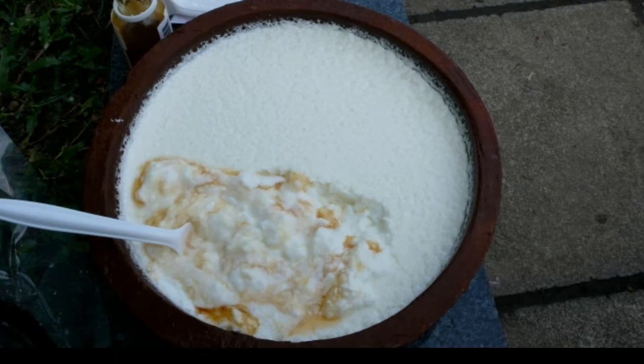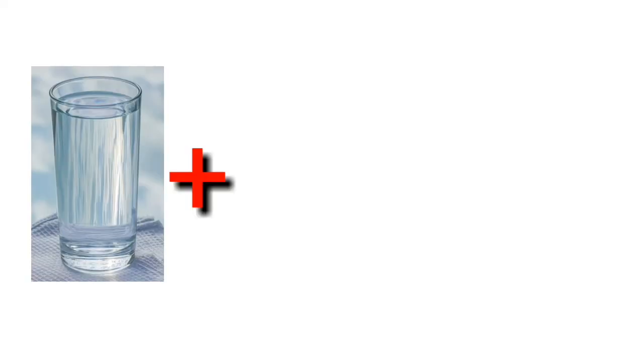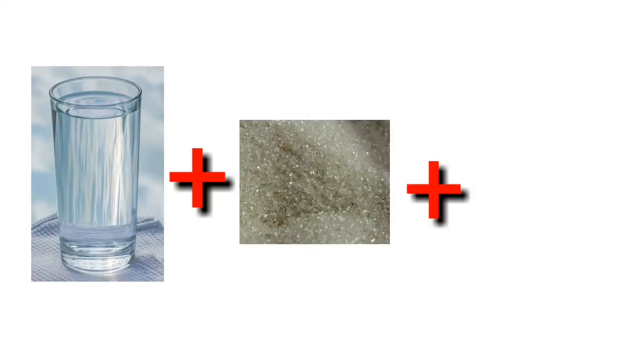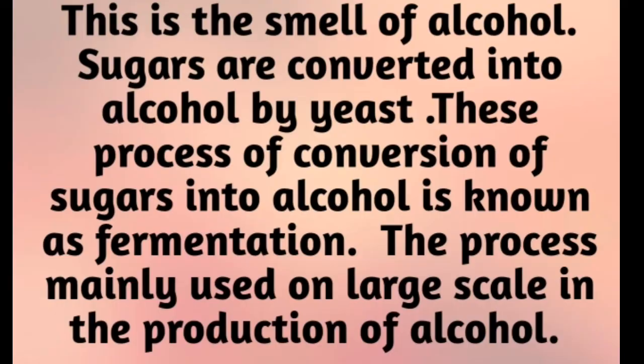In bakeries, when yeast is added to the dough for the preparation of bread, the dough rises. This is due to the production of carbon dioxide gas during the process of fermentation. Bubbles of the gas make the dough spongy in nature.